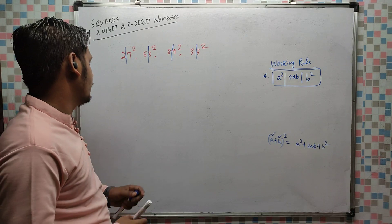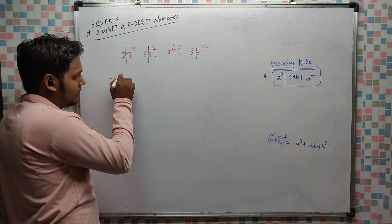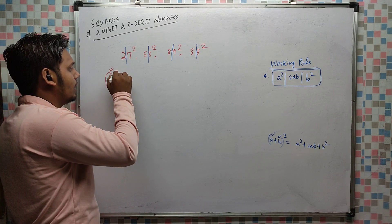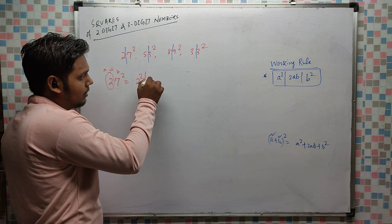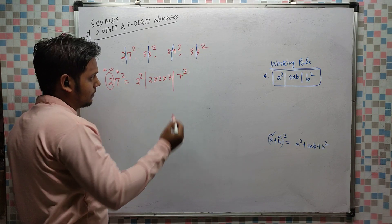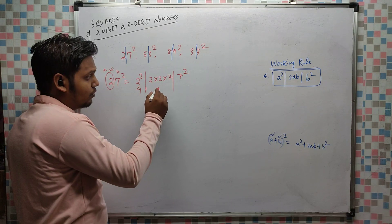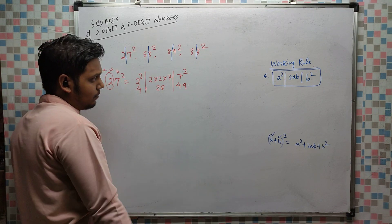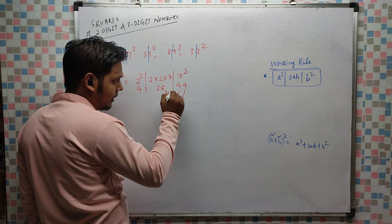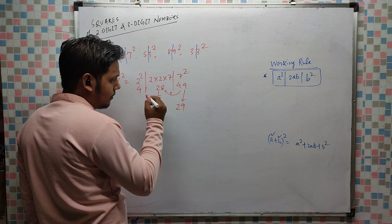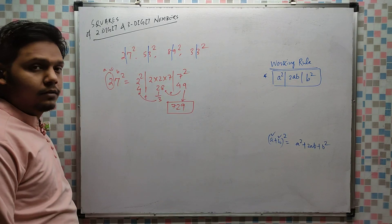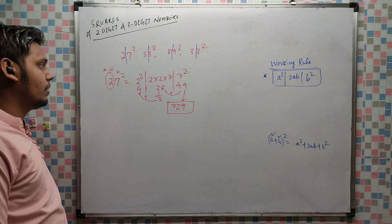Let's do 27². How many digits? 2 digits. Let a = 2 and b = 7. So: 2² = 4, 2×2×7 = 28, 7² = 49. Now balance: drop 9, 4 adds with 8 giving 12, carry 1; then 4 + 2 + 1 = 7. Answer is 729.